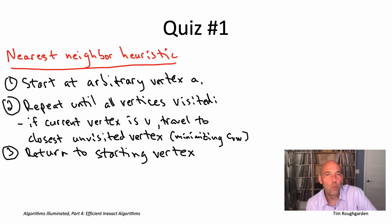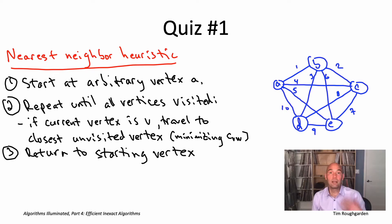Next, I would like you to work out what the nearest neighbor heuristic is going to do in this five vertex example I'm going to draw on the right. In addition to figuring out the output of the nearest neighbor heuristic, I'd like you to figure out what is the best, the minimum cost traveling salesman tour.